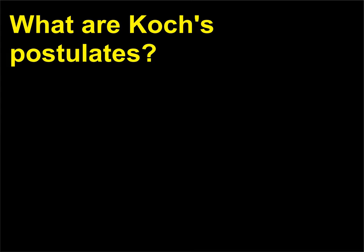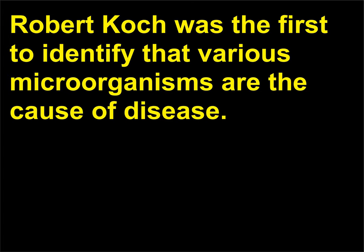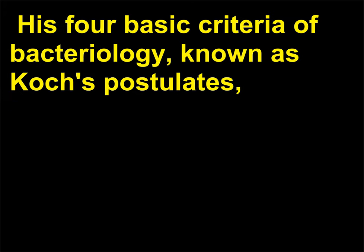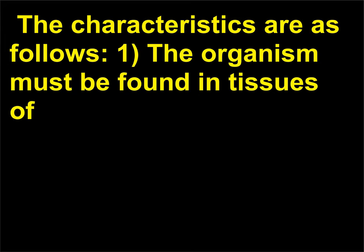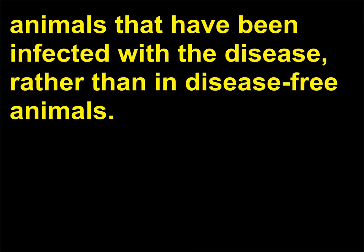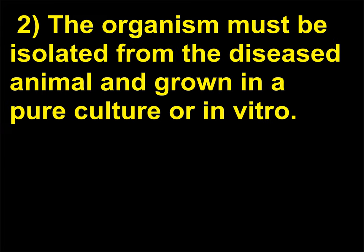What are Koch's postulates? Robert Koch was the first to identify that various microorganisms are the cause of disease. His four basic criteria of bacteriology, known as Koch's postulates, are still considered fundamental principles of bacteriology. First, the organism must be found in tissues of animals infected with the disease, rather than in disease-free animals. Second, the organism must be isolated from the diseased animal and grown in a pure culture or in vitro.